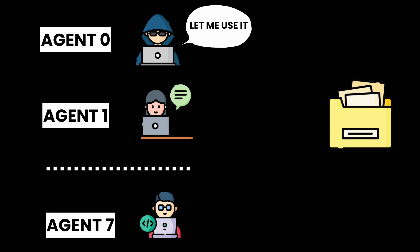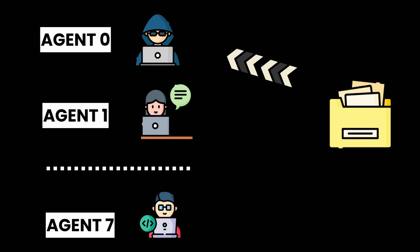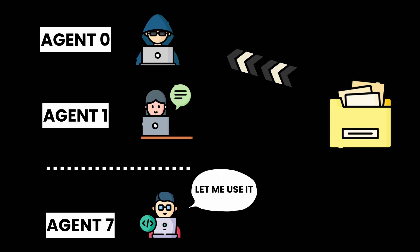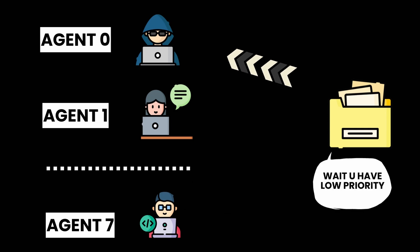Let's say there are seven agents where agent zero has the highest priority, agent one has the next highest priority, and agent six has the lowest priority. The highest priority agent will continue to get the grant from the resource as long as it keeps the request high. The chance of getting a grant for low priority agents will reduce.